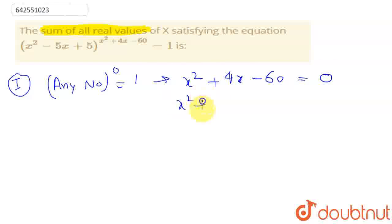We can write it like x squared plus 10x minus 6x minus 60 is equal to 0. So x plus 10 minus 6, x plus 10 is equal to 0, which gives us x is equal to 6 or minus 10.